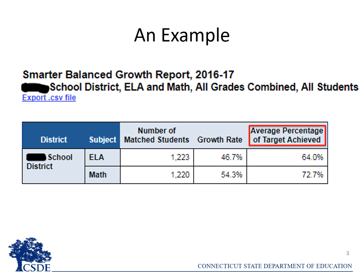In other words, this is the average of the extent of their growth targets that is achieved by all students. In this example, the 1,223 matched students in ELA, on average, achieved 64 percent of their respective growth targets. Correspondingly, in mathematics, the 1,220 matched students, on average, achieved 72.7 percent of their respective growth targets.